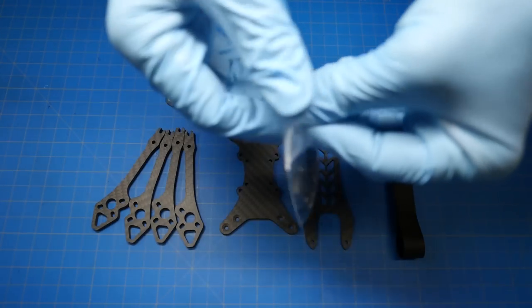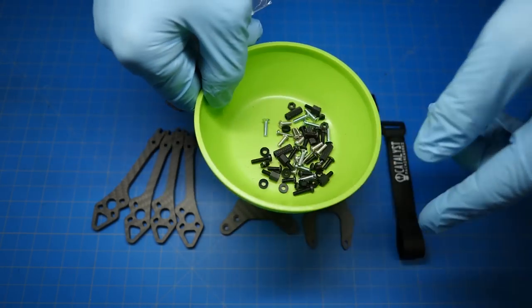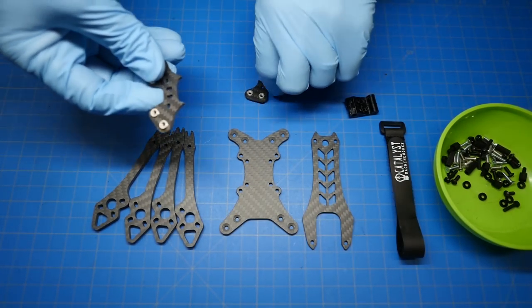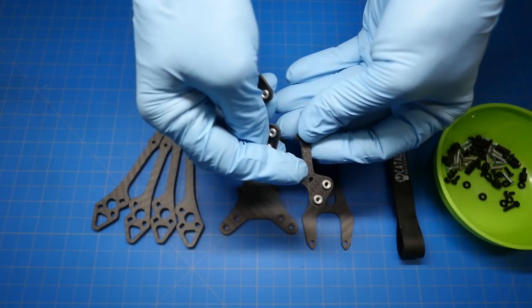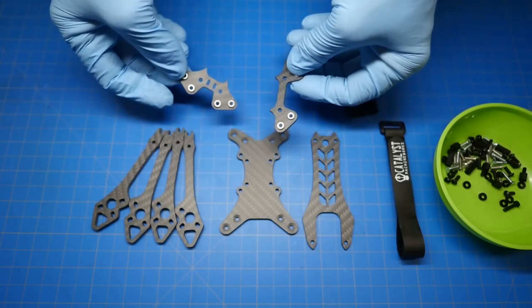I'm going to go ahead and take the fastener bag and dump it in a bowl. The first step is to install the standoffs onto the front and rear cross brace.